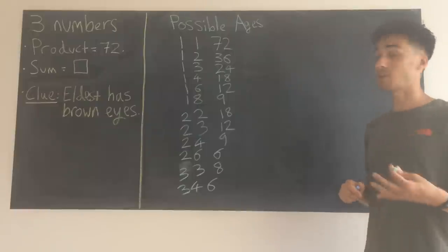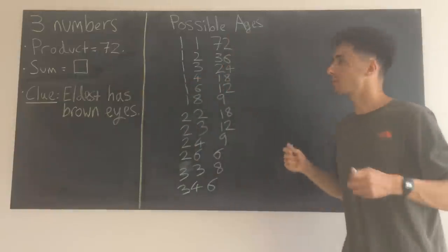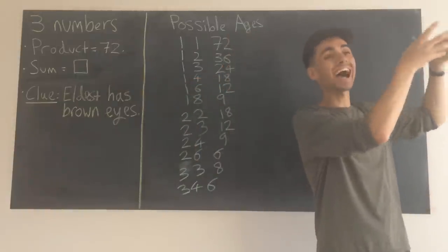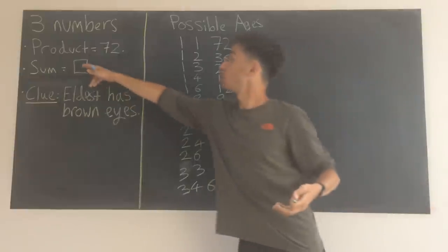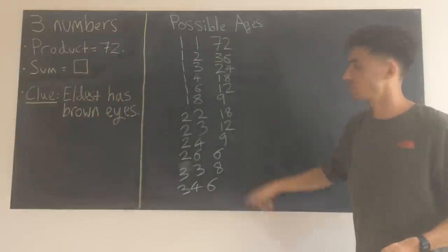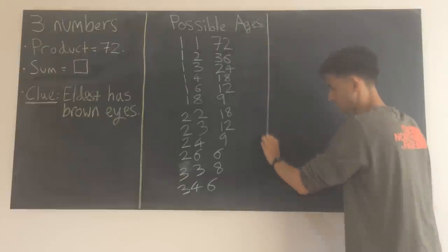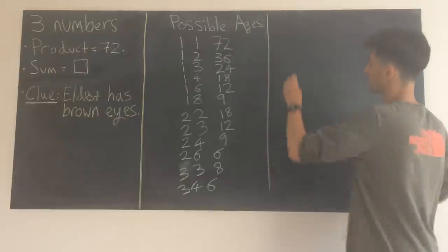The next step then should be us considering the sums of those ages, because if you remember, the second mathematician went away, had a look at the house number, which is the sum, but he couldn't decide afterwards which of these combinations was correct. So let's start another column in our table, and this is our sum column.